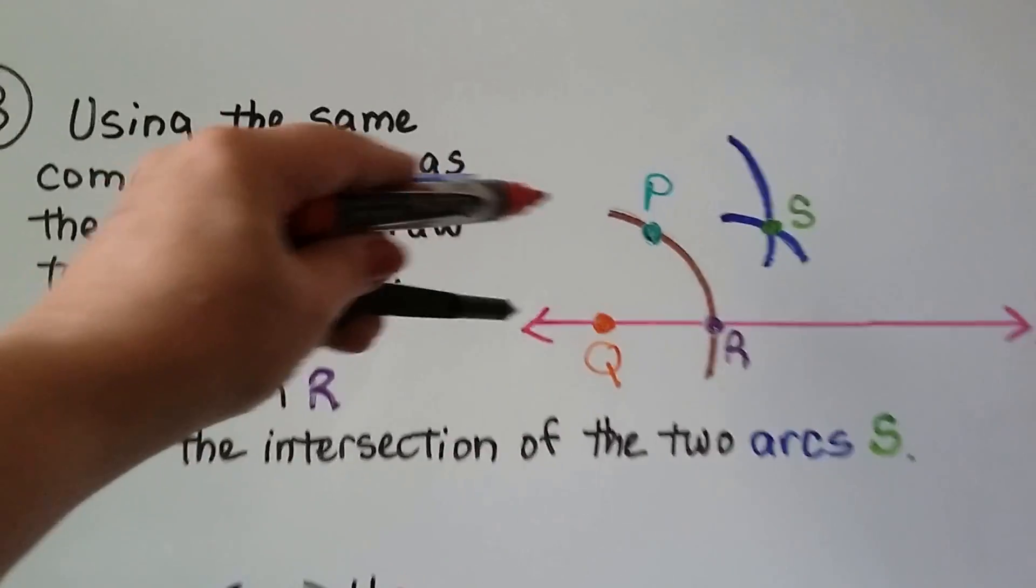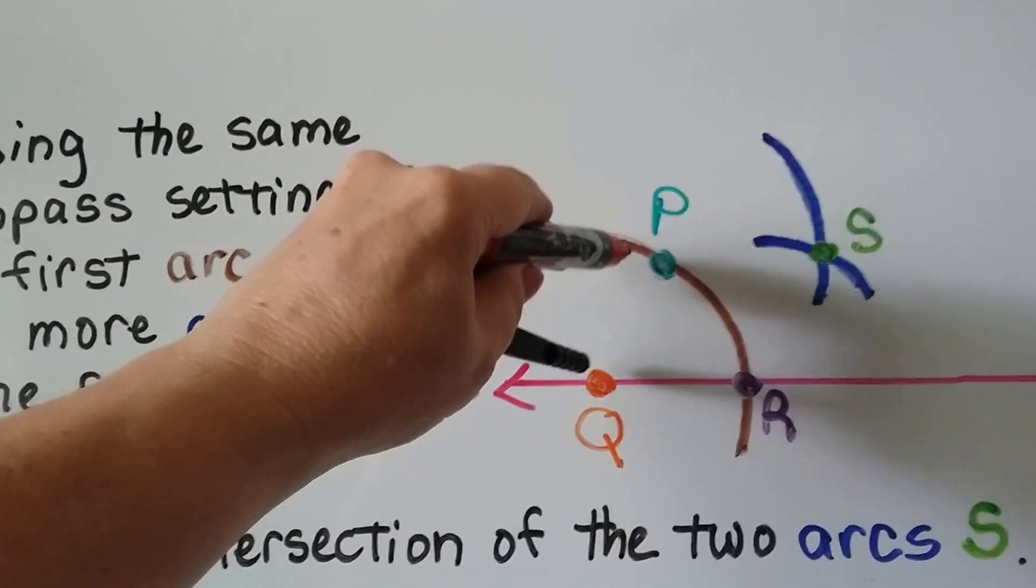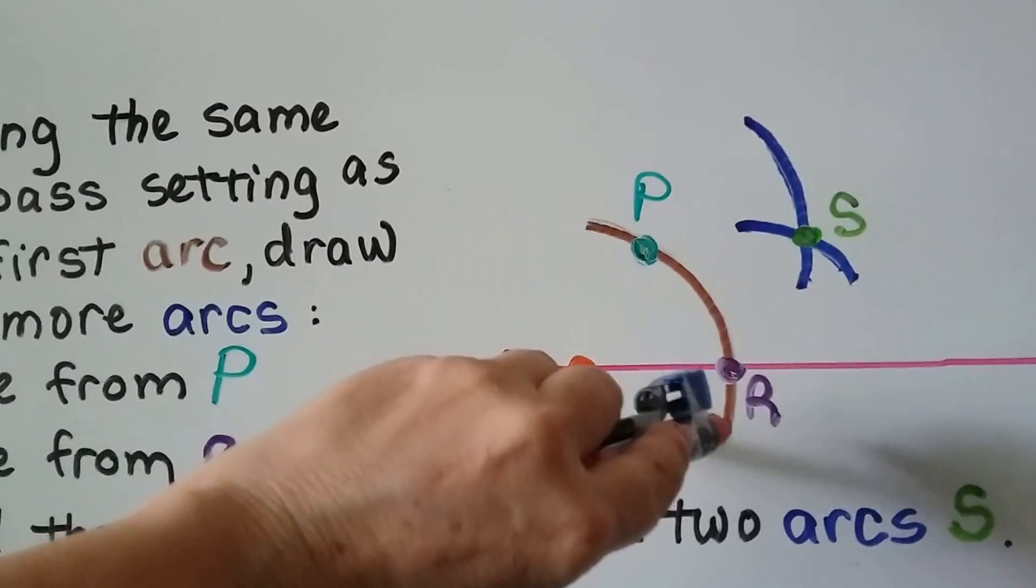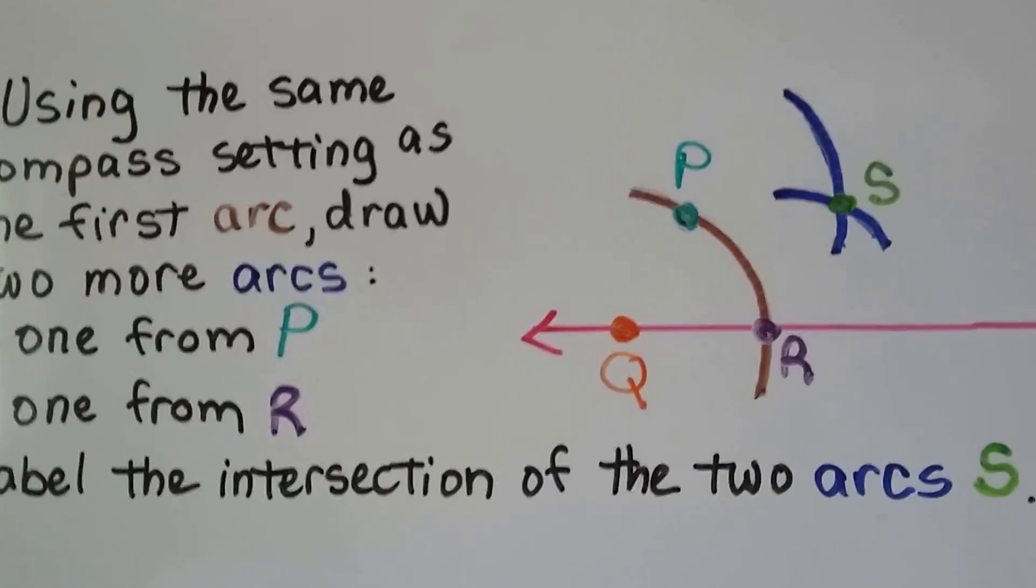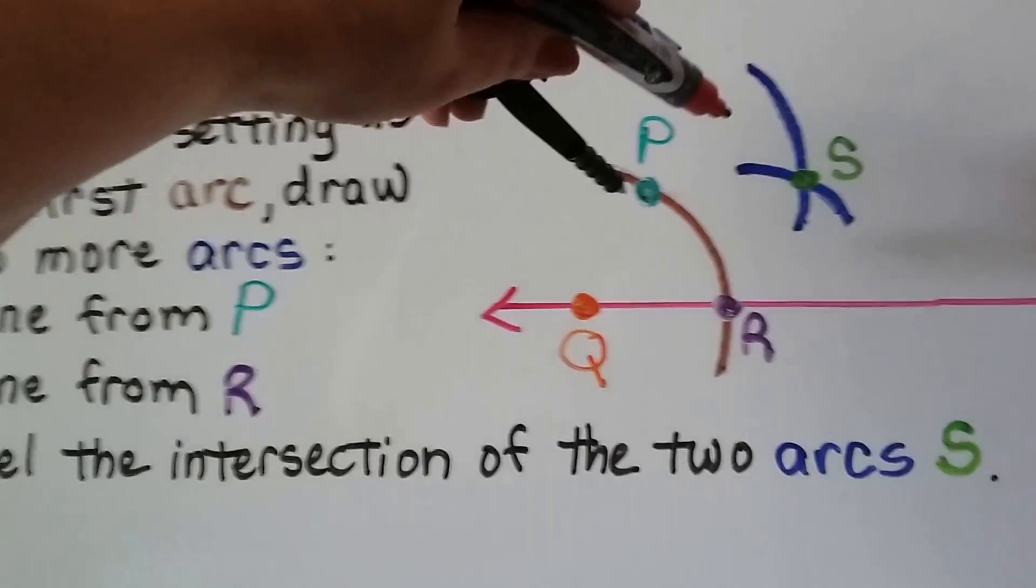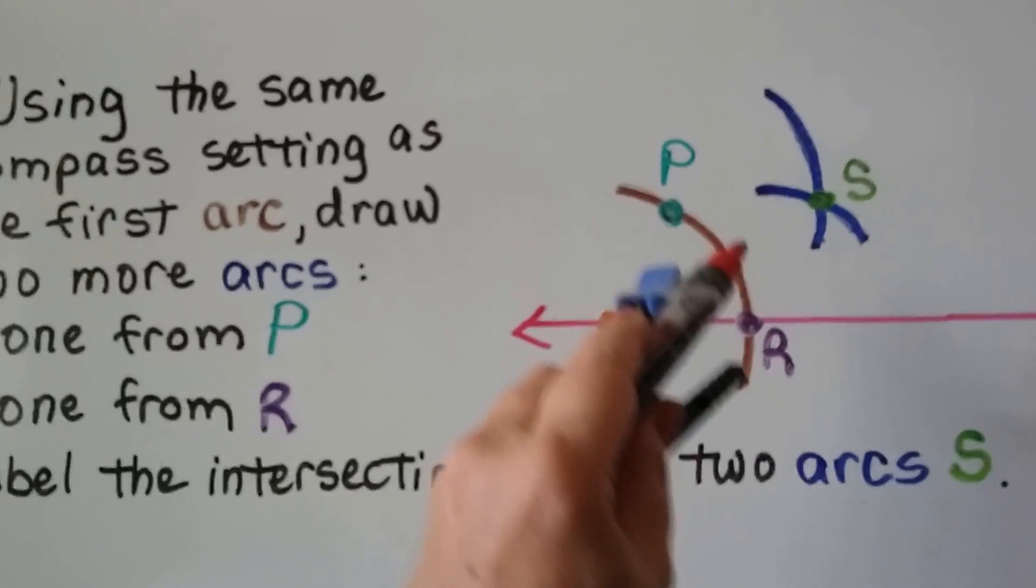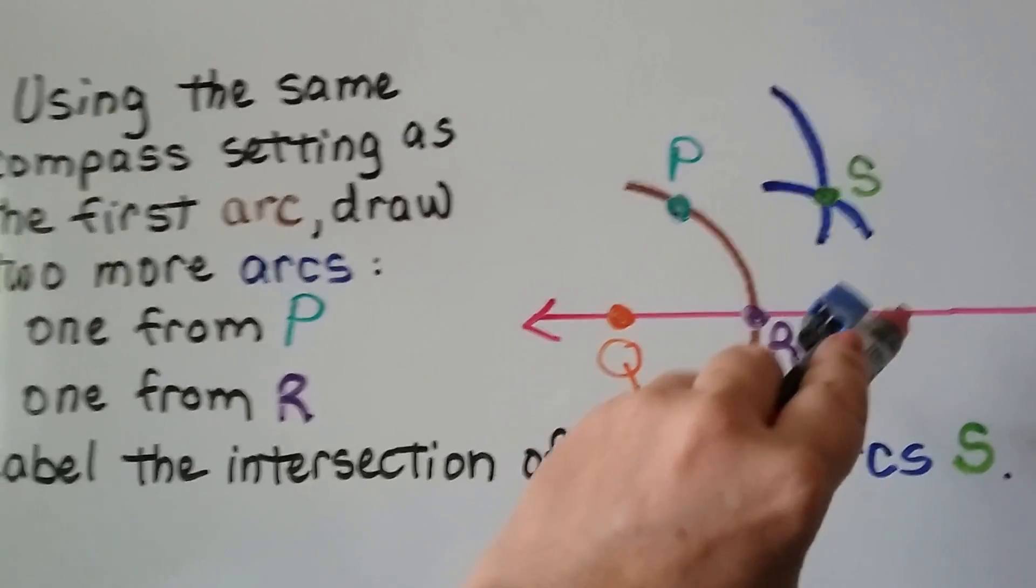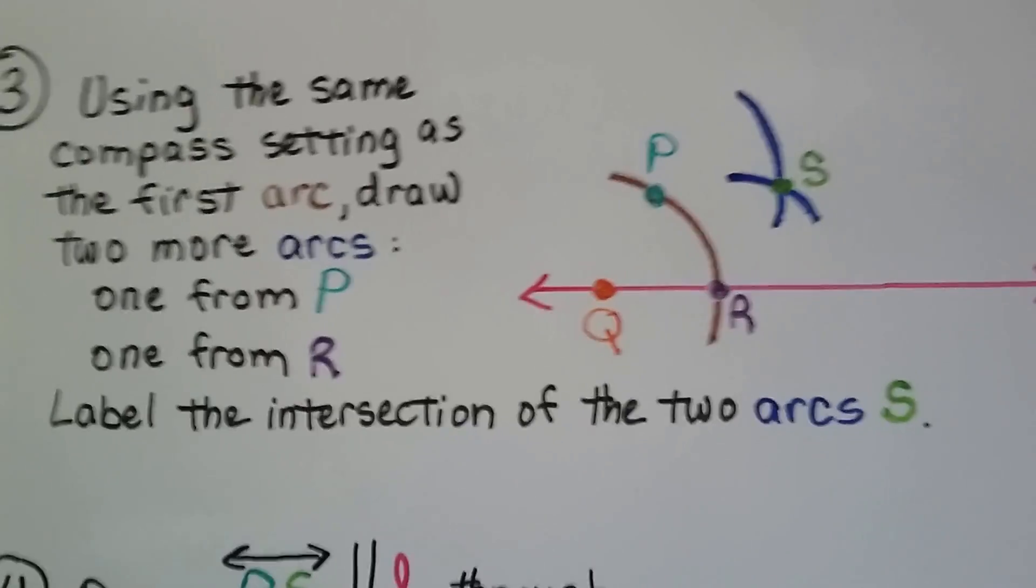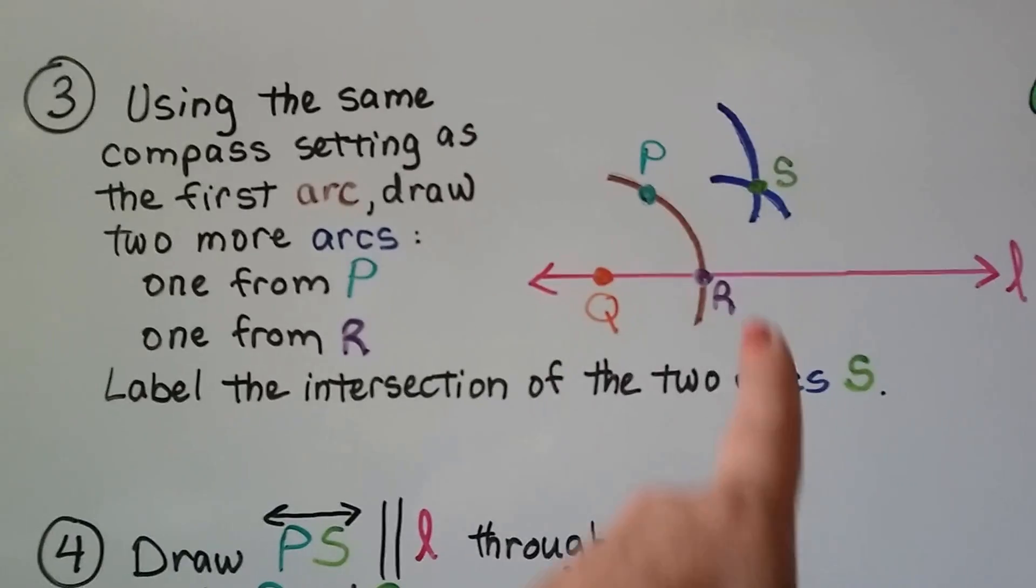So with the same compass setting that we use to make this brown arc, we make two more arcs, one from P like that and one from R like that. And we label the intersection of the two arcs as S.